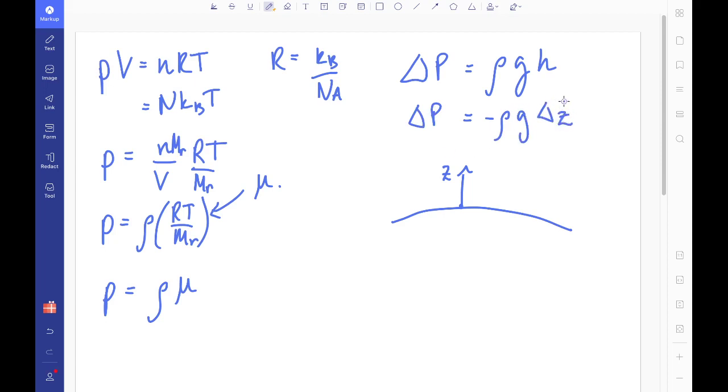And if I take a small enough change in height, and there's going to be a small enough change in pressure, I can actually write this as a differential equation. dp dz equals negative rho g. And this is often called the hydrostatic equation. So if you're in hydrostatic equilibrium, this is true.